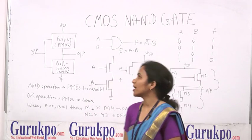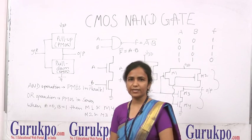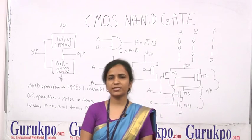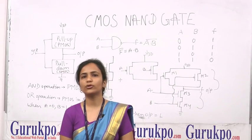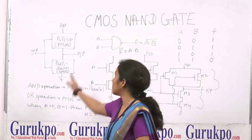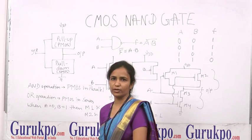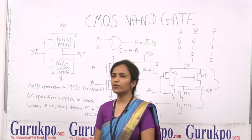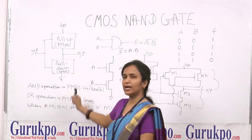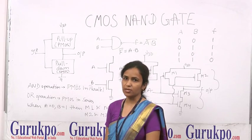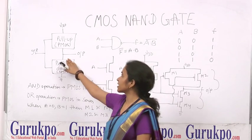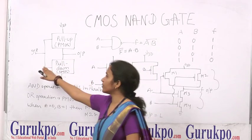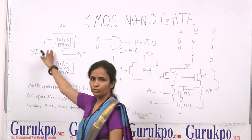Here I am going to discuss about CMOS NAND gate, which is CMOS logic design, consisting of two networks: pull-up and pull-down network. The pull-up network is made by PMOS transistors and the pull-down network is made by NMOS transistors. The output is taken at the junction point and input is applied on both the networks.